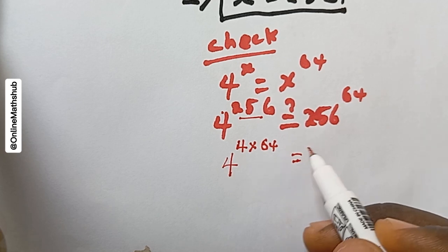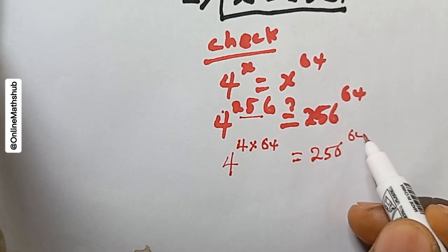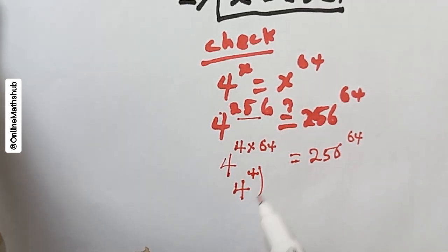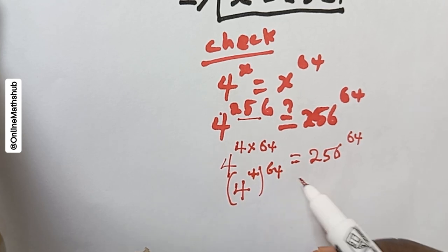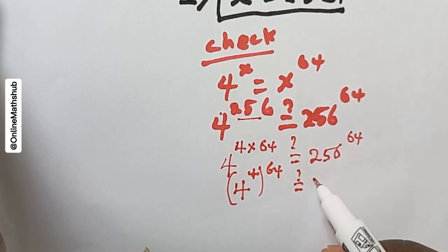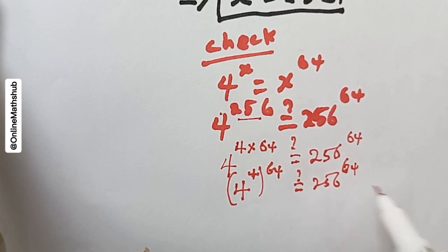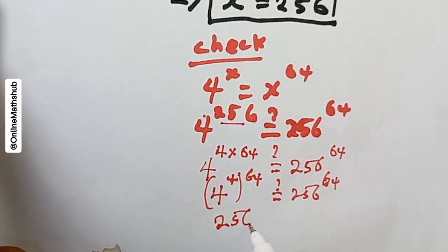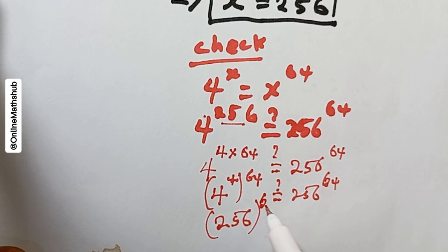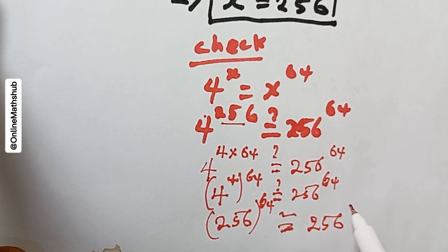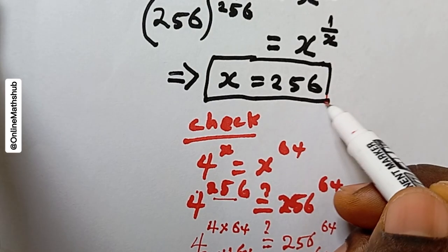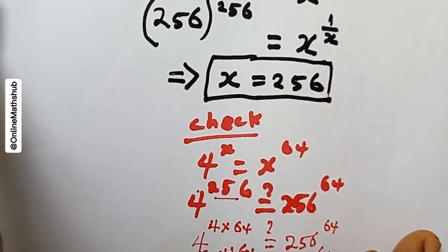Using the rule of indices, 4^(4×64) = (4^4)^64. Since 4^4 = 256, this becomes 256^64. And that is exactly what we have on the right-hand side, which confirms that x = 256 does satisfy the equation 4^x = x^64.